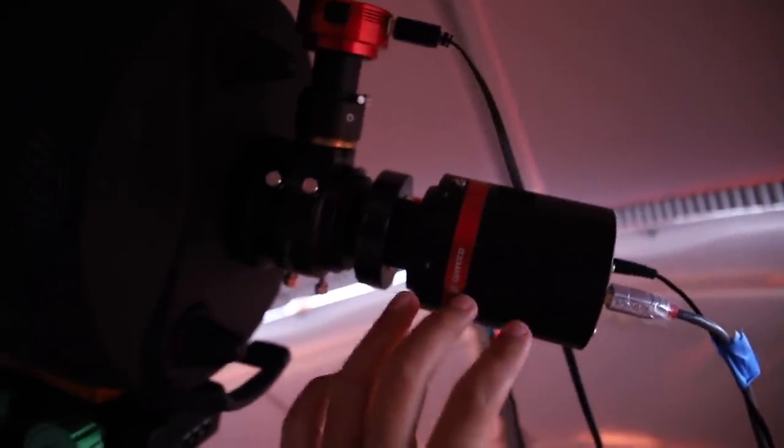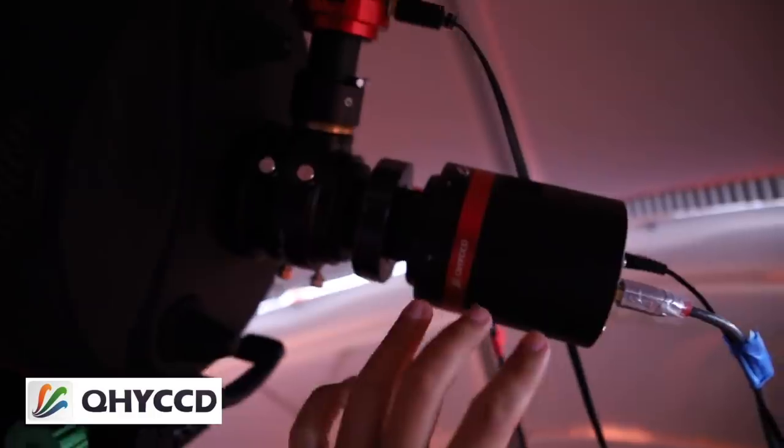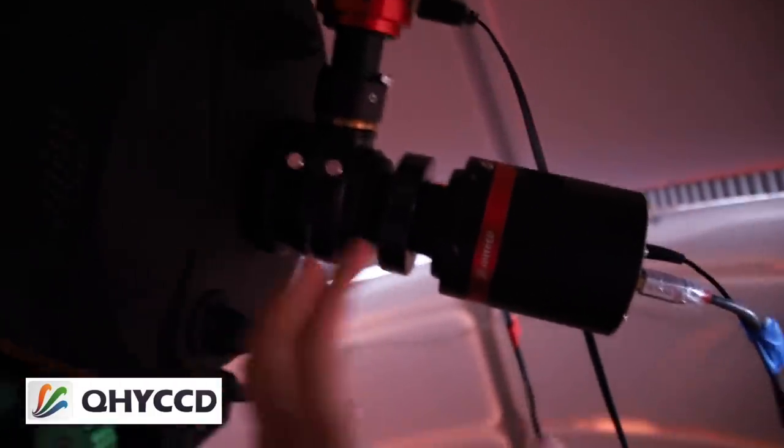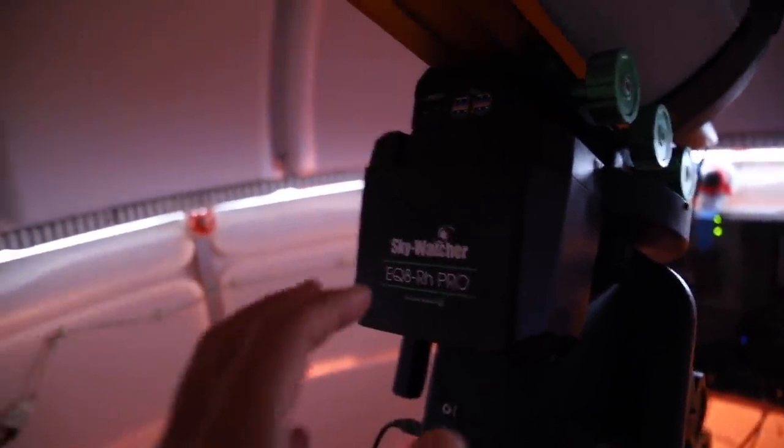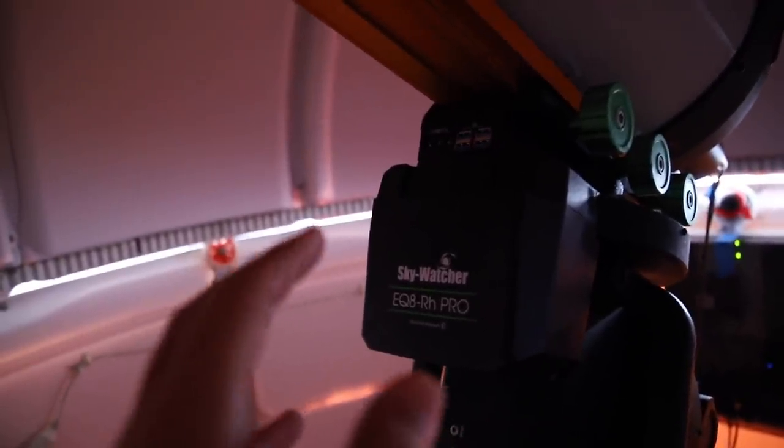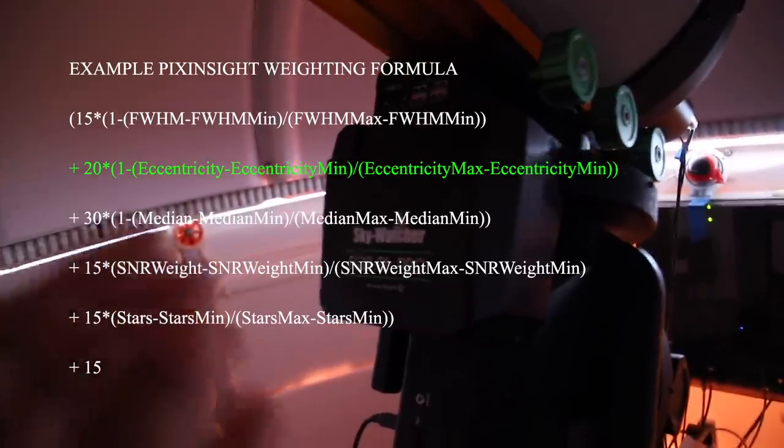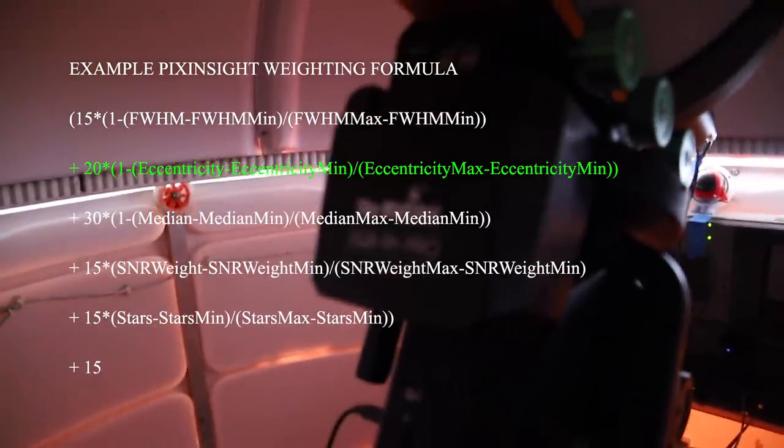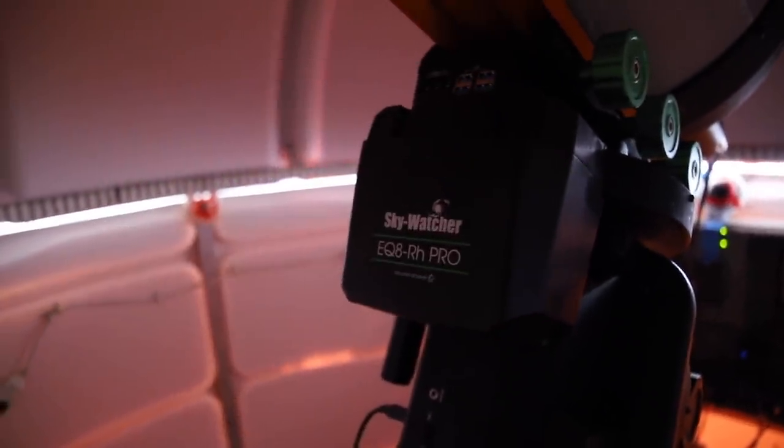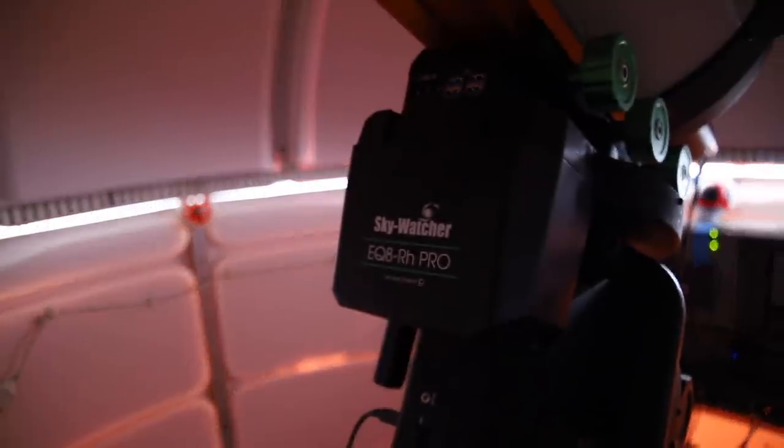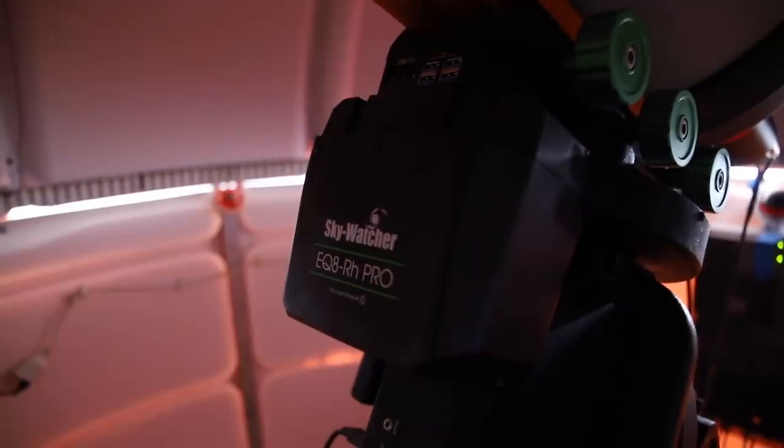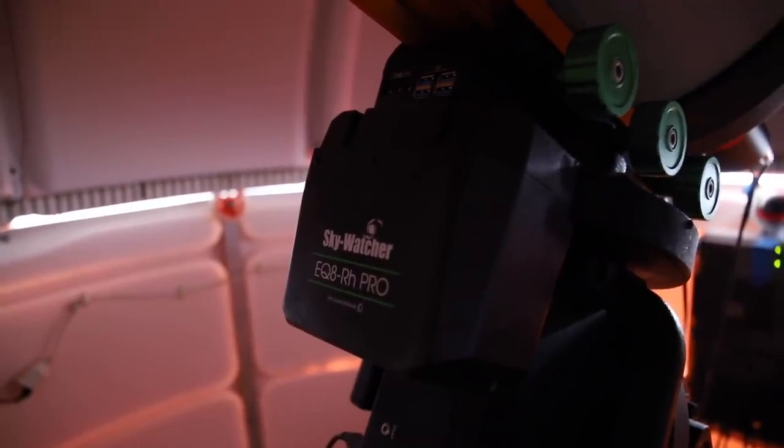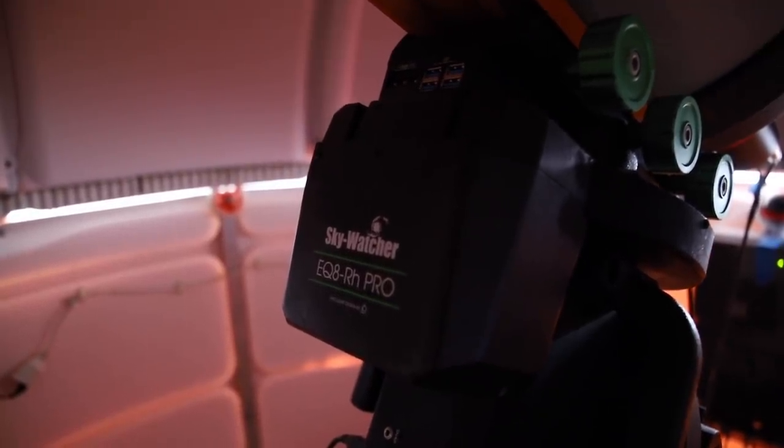I'm using the QHY268M which is just a fantastic 16-bit ASPC sized camera and it's working really well. The other thing I should mention is that I'm using the Sky Watcher EQ8RH Pro which is just such a rock solid mount that while I'm weighting the images in PixInsight I actually don't care too much about eccentricity because I know that my stars are fully round now. So I'm going to concentrate more on the half flux radius or full width half maximum which is basically a measurement of the focus of the stars and I'll also use star count which I'll show you in a moment.